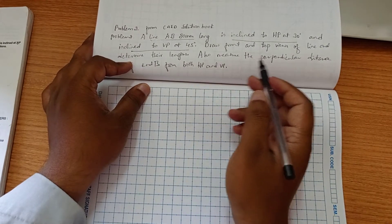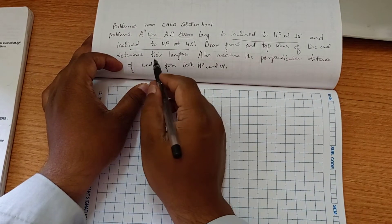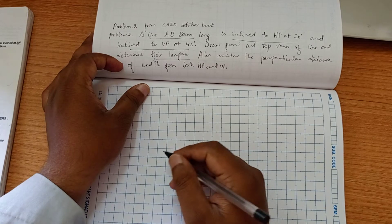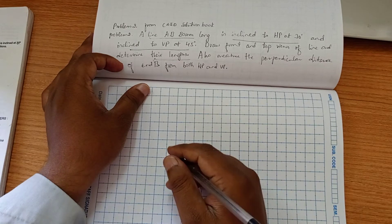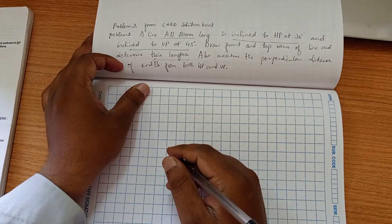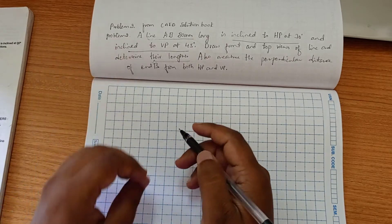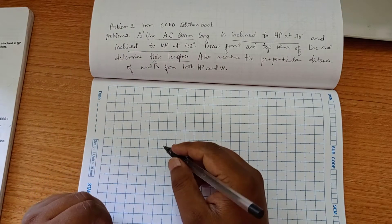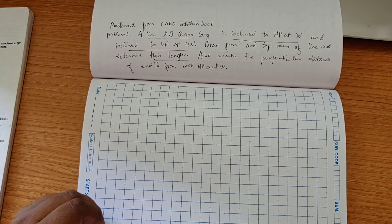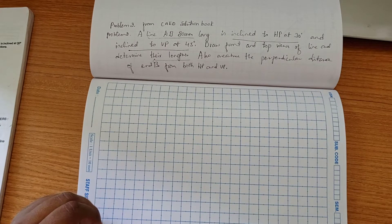Draw the front and top views of the line and determine their length. In this problem they have mentioned true length and the angle of inclination to HP and the angle of inclination to VP. Now we have to find out the apparent end lengths and apparent end inclinations. So I am going to proceed with the problem.